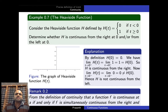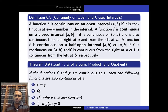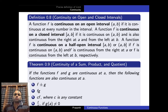From the definition of continuity, f is continuous at a if and only if f is simultaneously continuous from the right and from the left. Now we will discuss continuity on open and closed intervals. There are four types of intervals: open interval (a, b), closed interval [a, b], left-open right-closed (a, b], and left-closed right-open [a, b).